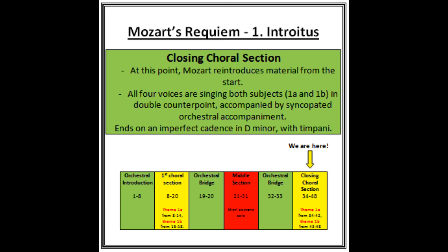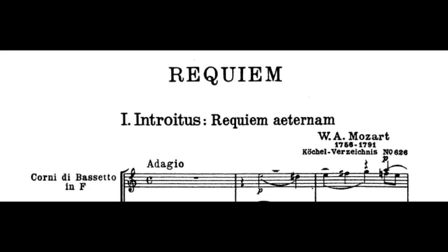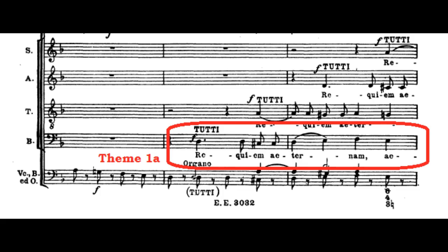The imperfect cadence leads into the next section, which is the Kyrie — we're going to look at that in a separate video. Before we finish, let's quickly recap the two main themes: Theme 1A, which we heard right at the start, and Theme 1B, the semiquaver passage which appears at various times. Here is what they look and sound like.